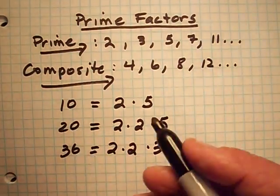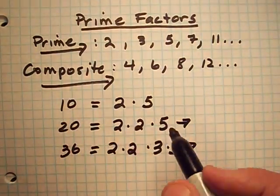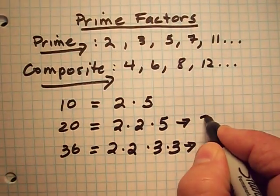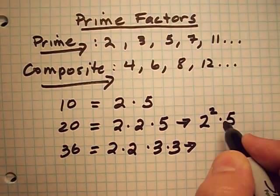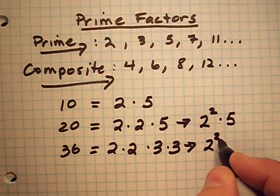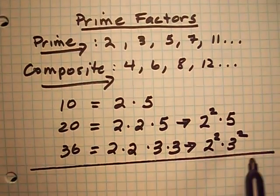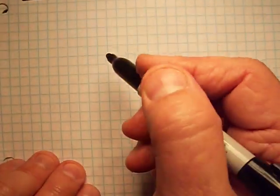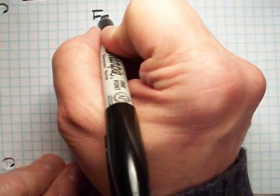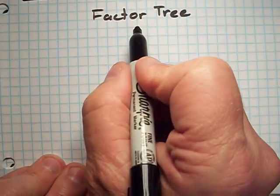With 20 and 36, I can also write those using exponents. For 20, I can write 2 squared times 5. For 36, I can write 2 squared times 3 squared. Now I want to show two ways to find the prime factors of a number. The first way is a factor tree — it's called a factor tree because it looks like a tree.